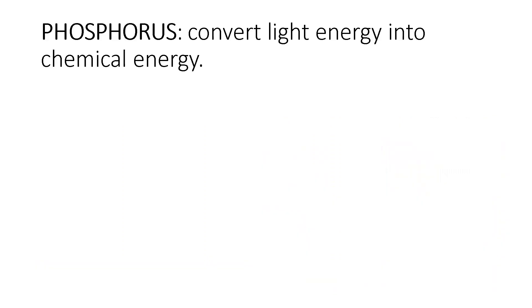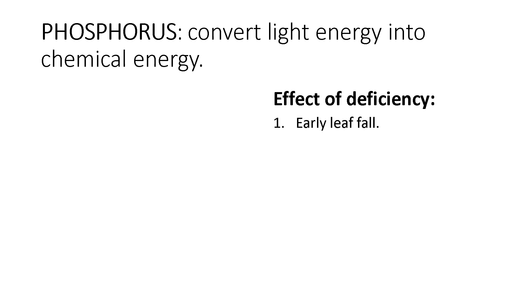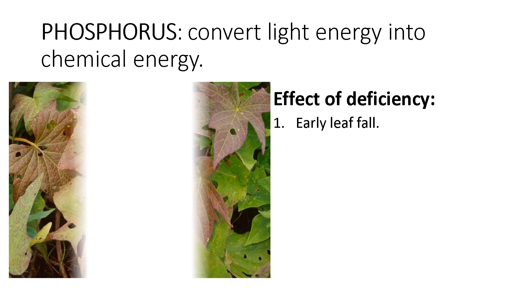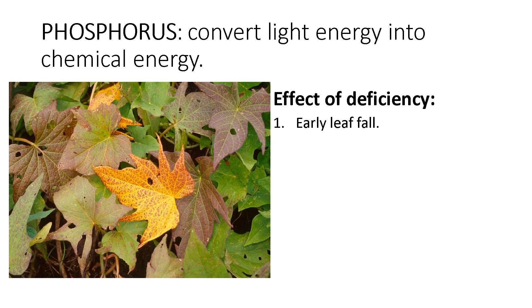Another important nutrient in plants is phosphorus, which converts light energy into chemical energy. If phosphorus is less in amount, there will be early leaf fall — as you can see in this plant. There will also be slow growth of roots and late flowering in plants.